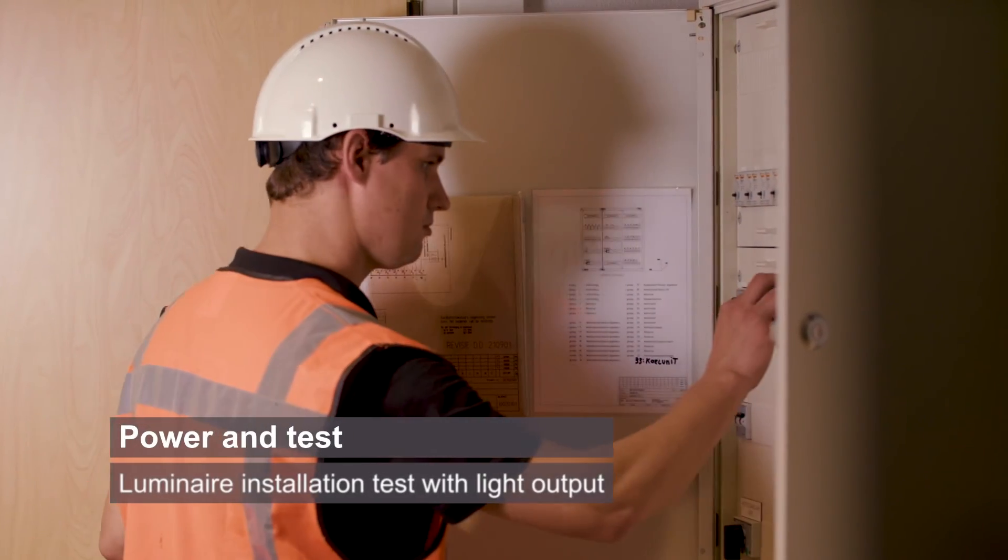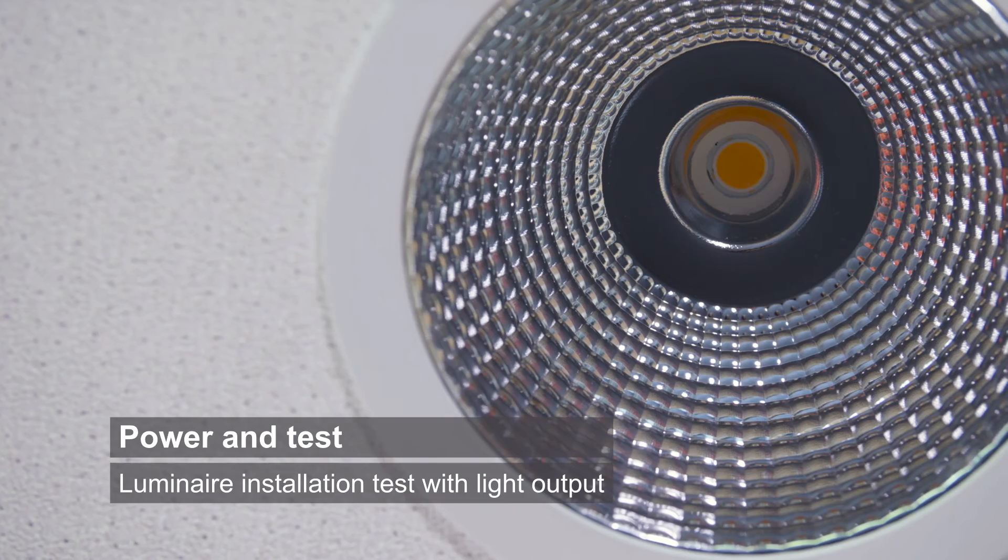Switch back on the power in the main cabinet and test the light output of the luminaire. When it all looks good, you've finished the installation of the downlight with LEDCODE BLE radio.